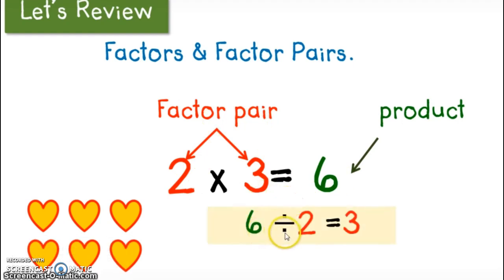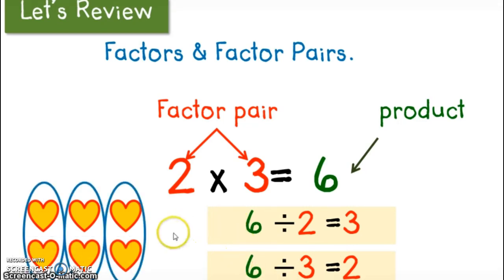And then you can reverse it to just knowing your division facts. Six divided by two is three. Or six divided by three gets you to two. And then they're just showing a picture there of showing you the division. Six divided by two. And then six also divided by three.